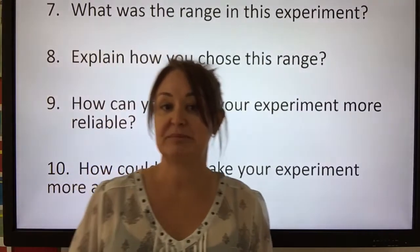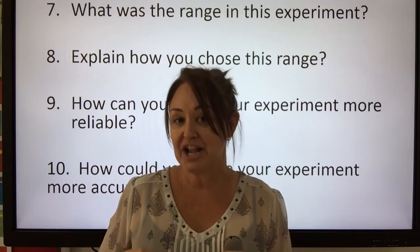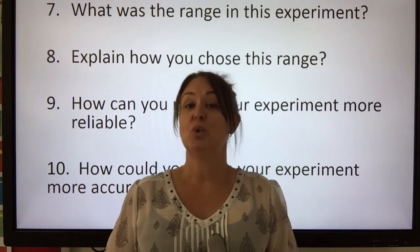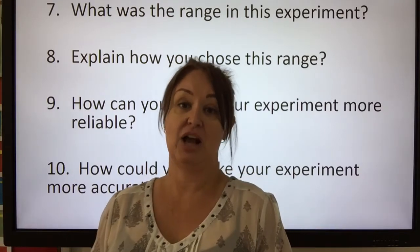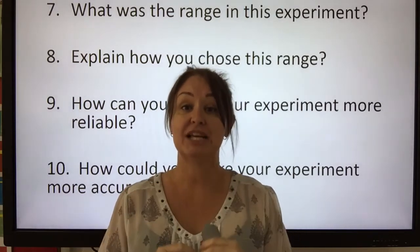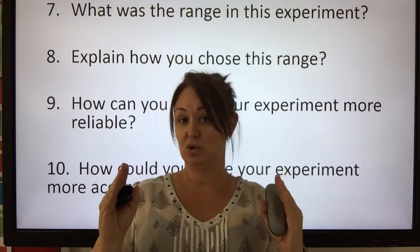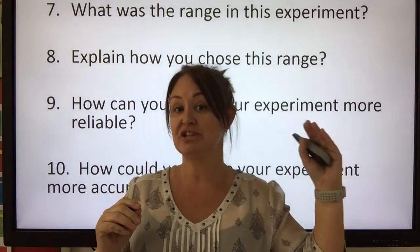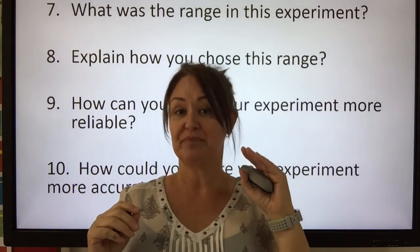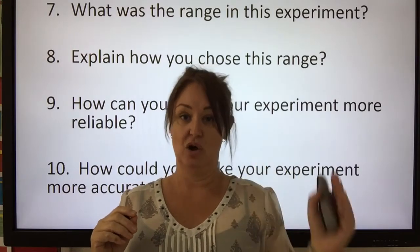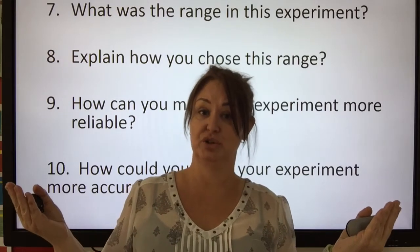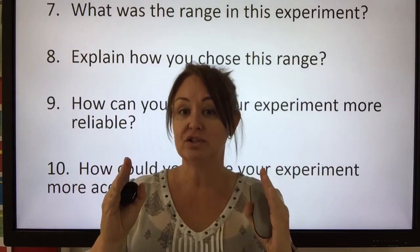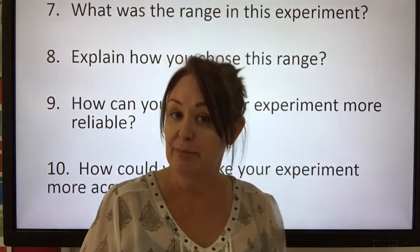How could you make your experiment more accurate? Accuracy is achieved by getting closer to the true value. For example, if the quickest fermentation time occurred between 30 and 40 degrees, you could repeat the experiment using 30, 32, 34, 36, 38 and 40 degrees. If the result was around 36 degrees, you could make your temperature intervals even closer together to narrow down the optimum.